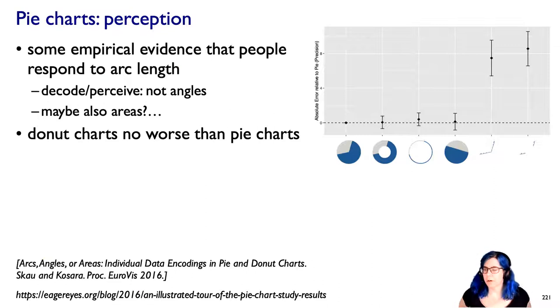People have also studied what are people doing when they're actually perceiving pie charts. Are they actually decoding the area or maybe they're decoding something else? So there's some empirical evidence that what people are really responding to is the arc length on the outside of the circle, more so than just the angle. Maybe they're also getting the area. Any of these is less able to be perceived precisely than, of course, these rectilinear lengths. And it's worth noting that things like donut charts, where you don't have that hole in the middle, are no worse than pie charts, according to this empirical analysis.